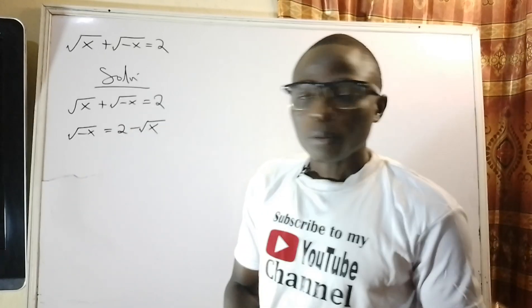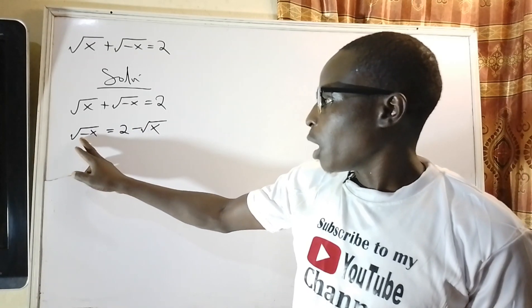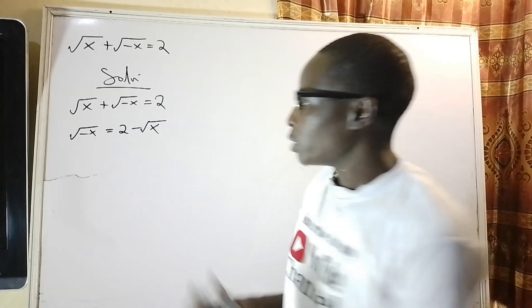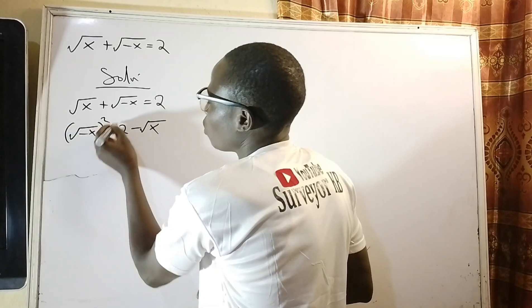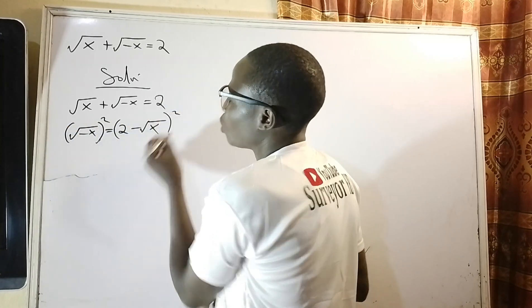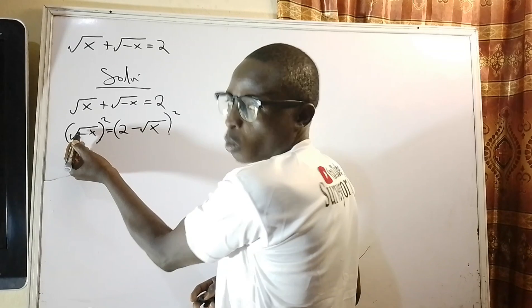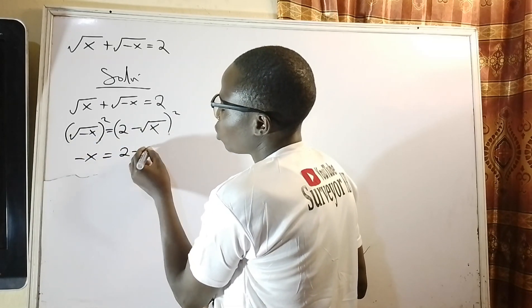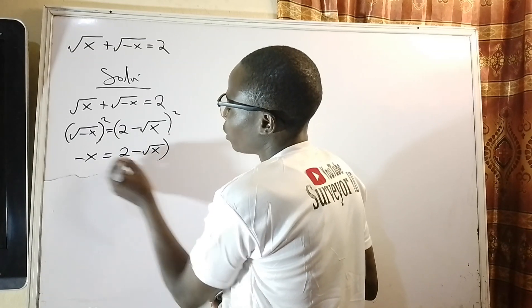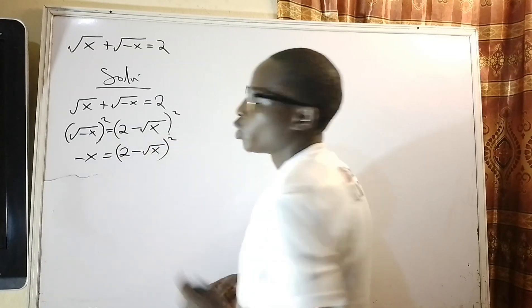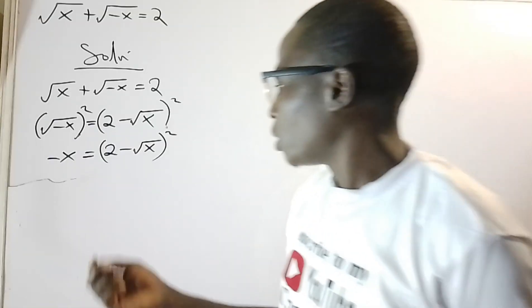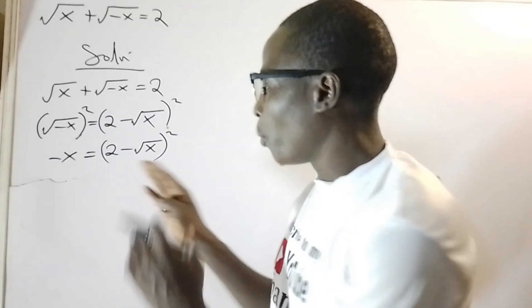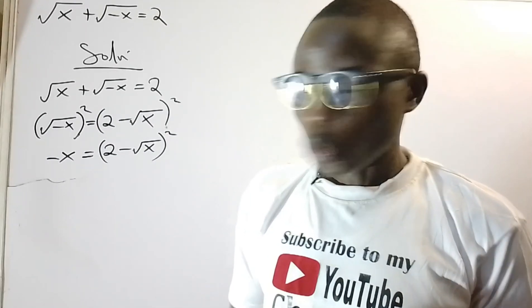In order to get rid of this square root, I need to square both sides. So here will be squared and here will also be squared, so that the square root cancels. I'll have negative x equals 2 minus square root of x, whole in bracket, squared.